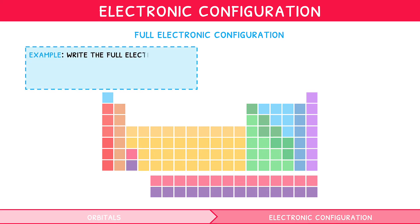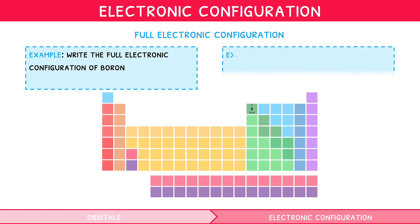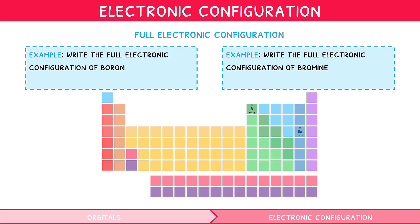Write the full electronic configuration of boron. Starting from hydrogen, we would count 1s1, 1s2, 2s1, 2s2, and finally 2p1. So the full electronic configuration of boron would be 1s², 2s², 2p¹.